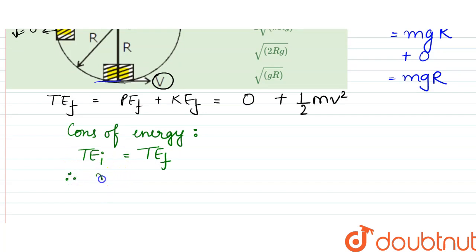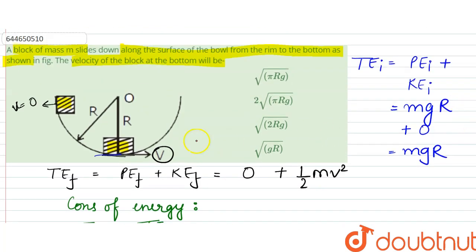What we can say is mg r would be equal to half mv square. So m gets cancelled from here. v square is equal to 2 g r. From here, velocity turns out to be root over of 2 g r.